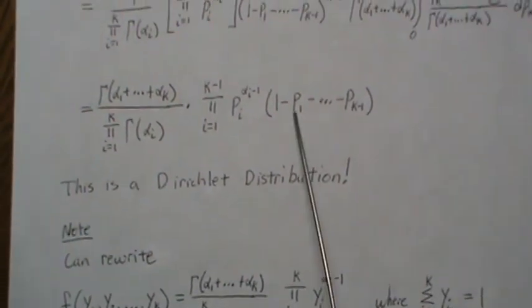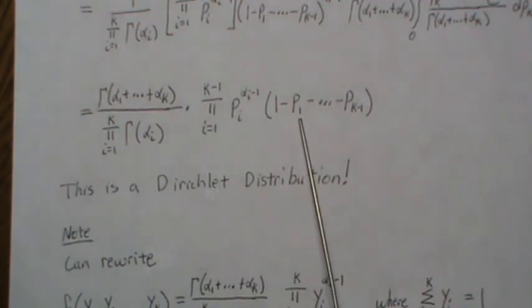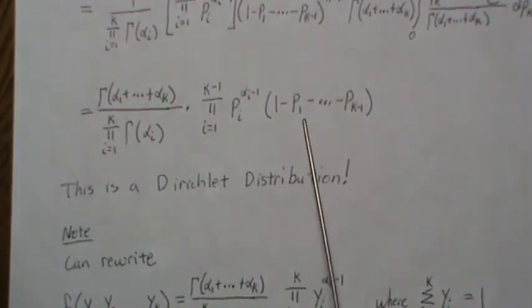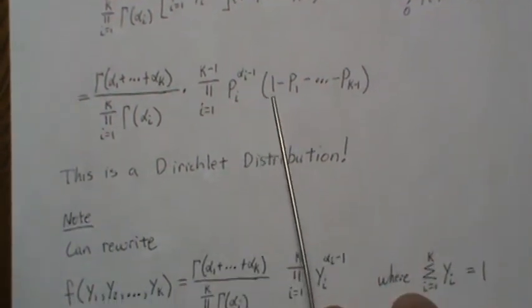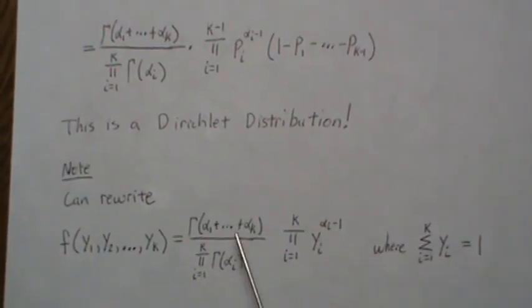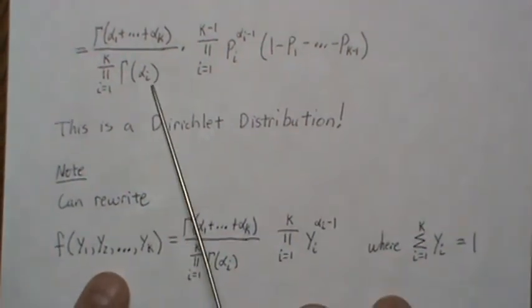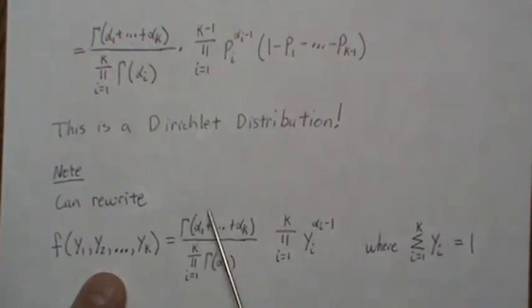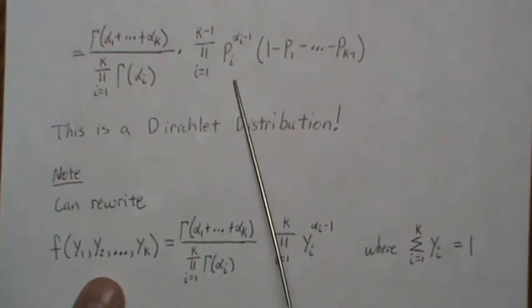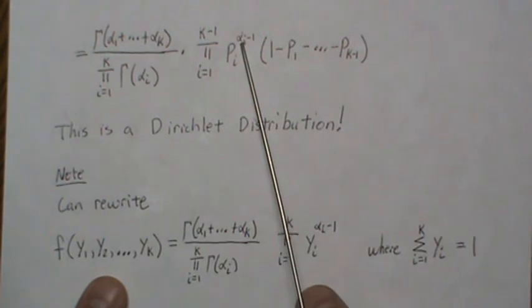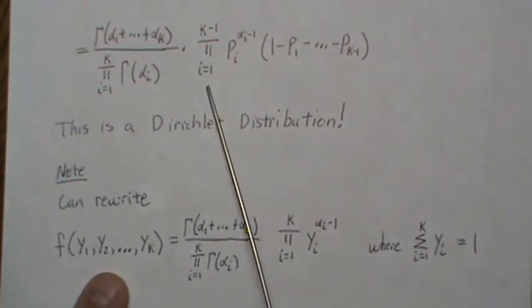Now it should be noted that what is often done, they take this right here and call it like PK or something, but I'll change them all to Y's so there's no confusion. So this comes down, these are the YI raised to the alpha I minus 1, but we go from 1 to K.